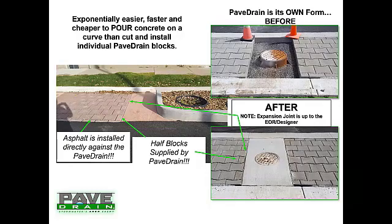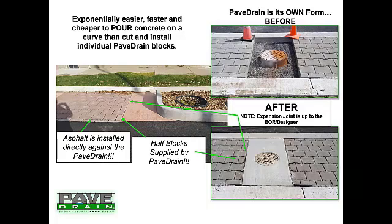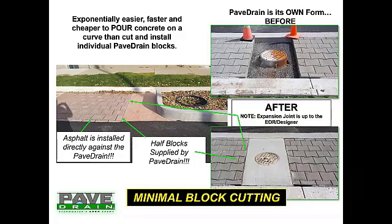What paved drain can do versus anything else is it is really its own form. You can see the size of the paved drain blocks here — they're almost six inches thick. Put a little expansion joint on there. Going in and cutting a block to fit around a manhole or an opening is very, very tough to do. It's much easier to just cut square-straight or have these pieces supplied by paved drain, put a little expansion joint in, and pour. Minimal block cutting is what we're looking for.